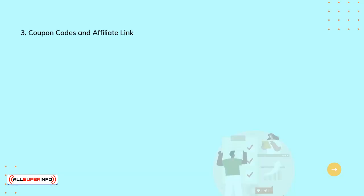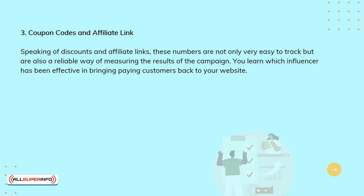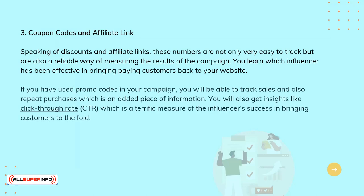Coupon Codes and Affiliate Links. Speaking of discounts and affiliate links, these numbers are not only very easy to track, but are also a reliable way of measuring the results of the campaign. You learn which influencer has been effective in bringing paying customers back to your website. If you've used promo codes in your campaign, you will be able to track sales and also repeat purchases, which is also an added piece of information. You will also get insights like Click-Through Rate, CTR, which is a terrific measure of the influencer's success in bringing customers to the fold.